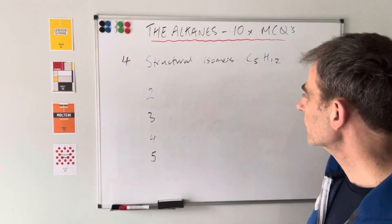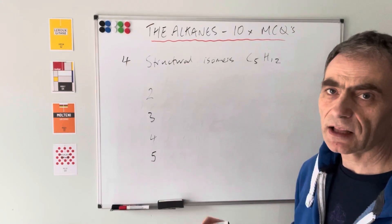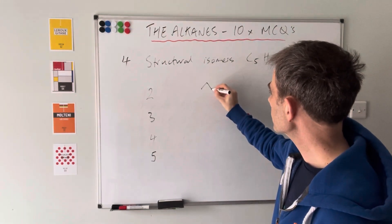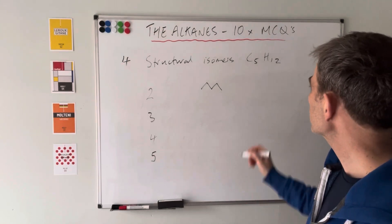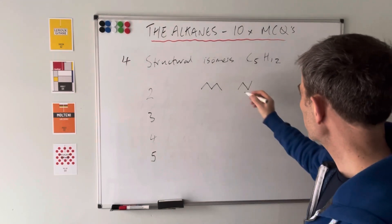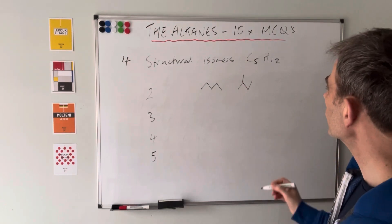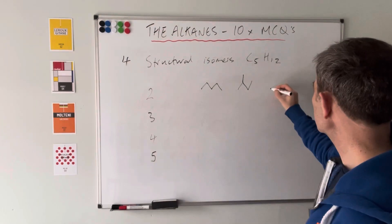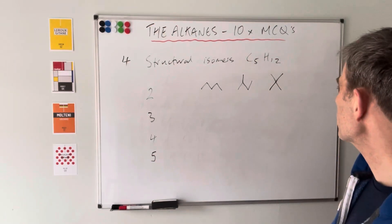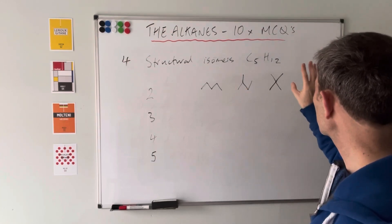Moving on to question four: how many structural isomers are there with molecular formula C₅H₁₂? I'll draw the skeletal formula for all possible structural isomers. With five carbons, I can do a straight chain of five - that's pentane. If I shorten the main chain to four and put a methyl branch on, that's 2-methylbutane. Shortening to three carbons, both remaining carbons must go on the central carbon as two methyl groups - that's 2,2-dimethylpropane. So the answer is three.